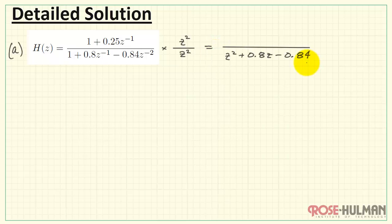First, apply that to the denominator. And then multiply through on the numerator. I'm going to write that as directly as z squared plus 0.25z. And then I've factored out a z out front.